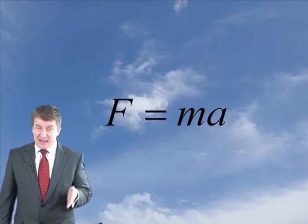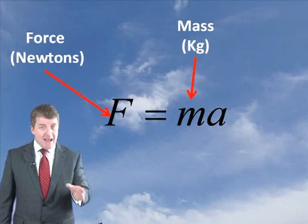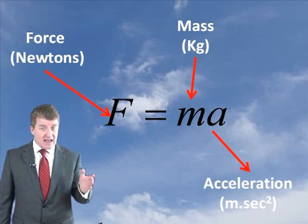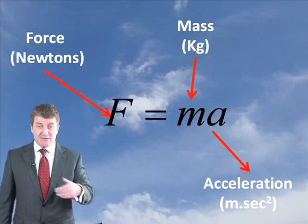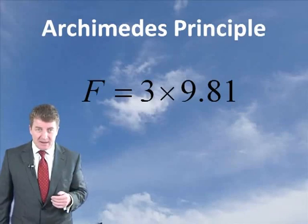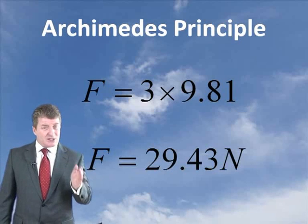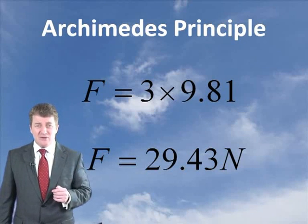Now, what is the force of gravity? The formula to determine the force due to gravity is F equals MA, where F is the force in newtons, M is the mass in kilograms, and A is acceleration due to gravity, which is 9.81 meters per second squared. So what is the force acting on a 3-kilogram block of wood? Using F equals MA: 3 times 9.81 gives a force of 29.43 newtons.